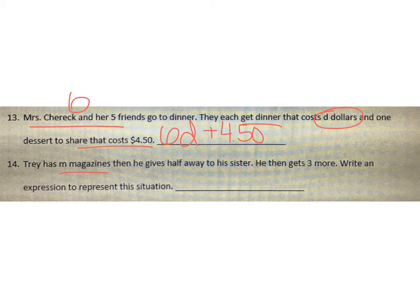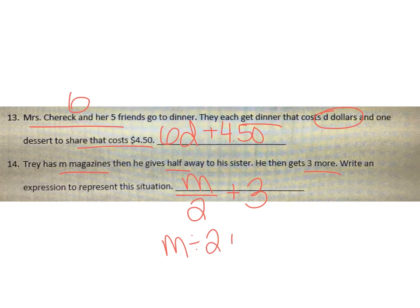Trey has M magazines, and he gives half away to his sister, then he gets three more. Start with your M magazines, divide by two because he gives half away, then plus three because he gets three more. Another way to write this is M divided by 2 plus 3, or since dividing by two is the same as multiplying by one half, you could write one half times M plus three.